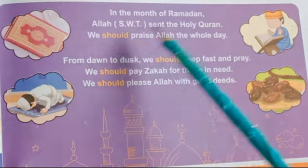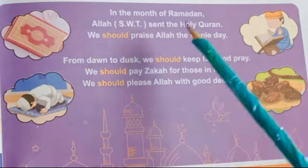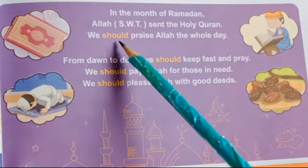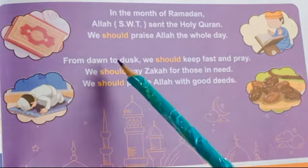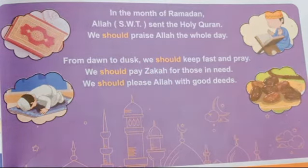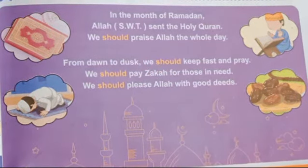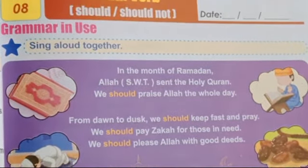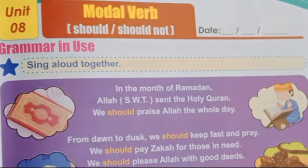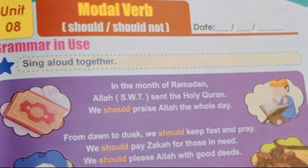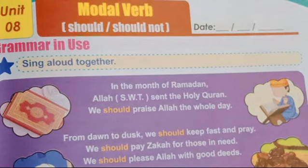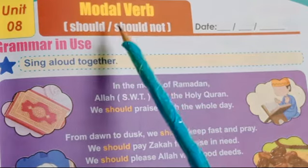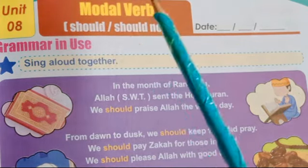As you can see, some words are written in a different color. Those words are 'should.' You know very well that this is our today's topic. Our today's topic is modal verb: should and should not. This is the second modal verb we are going to learn. The first modal verb was 'can' and 'cannot.' The second one is 'should' and 'should not.'